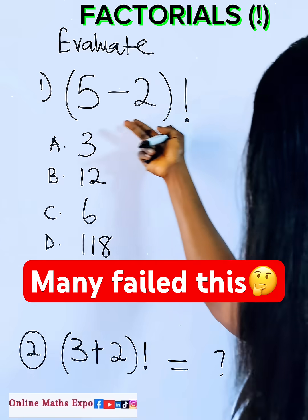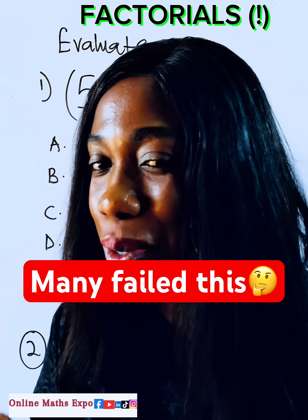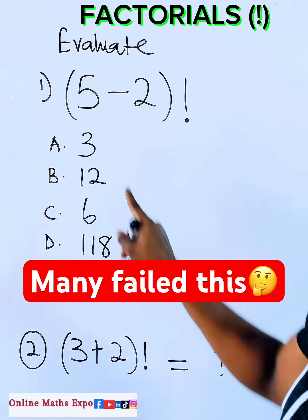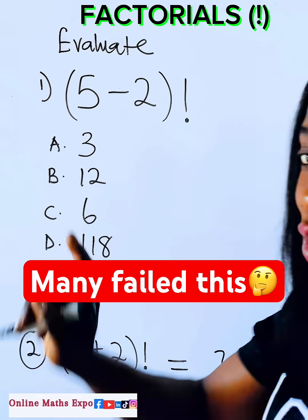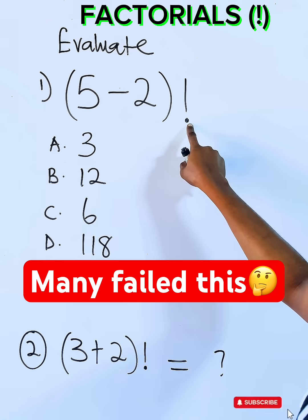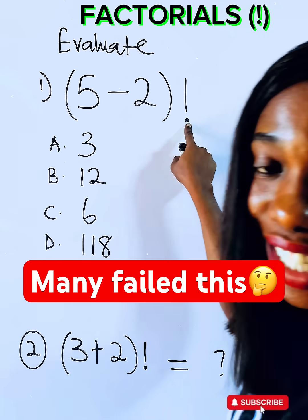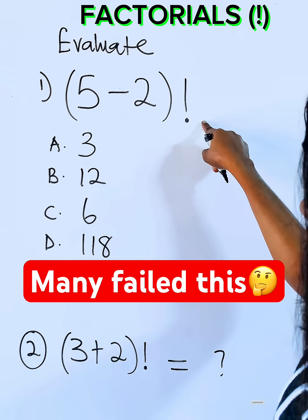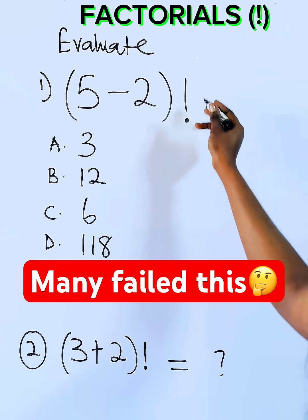You are asked to evaluate this. Don't be too quick to take these three. Just observe that there is a symbol here. Don't neglect this symbol. This is your factorial symbol, and what does it do? What it means is that when you have two factorial...